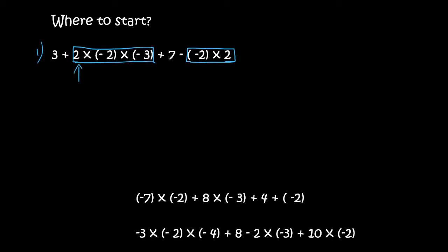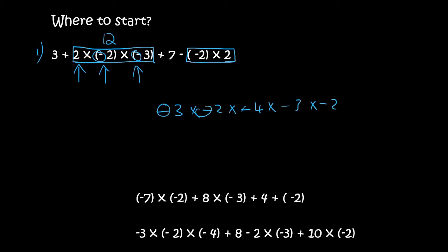So in the first block we have two times two times three. Now two times two is four, four times three is twelve. There are two negatives, so that's positive twelve. Because when you're multiplying you have to look at all the negatives together — one, two, three, four, five.